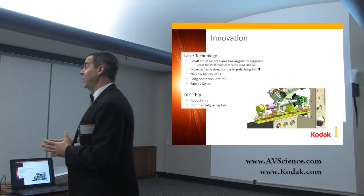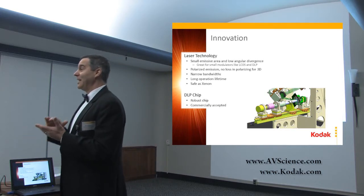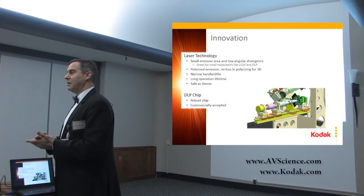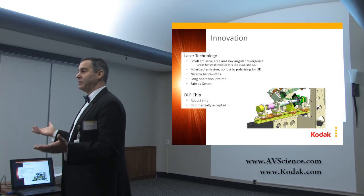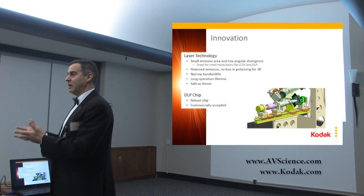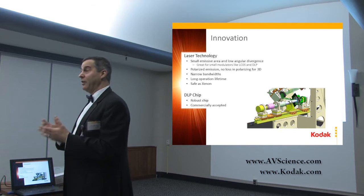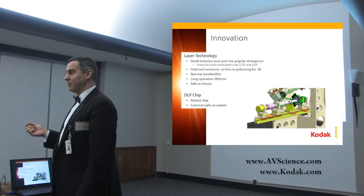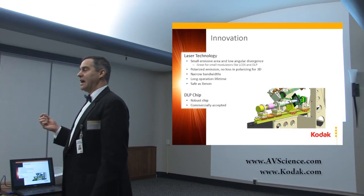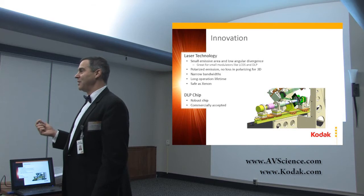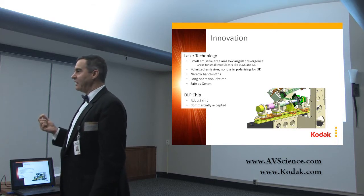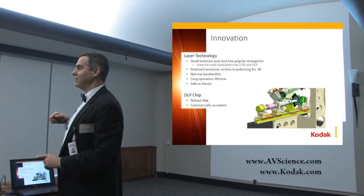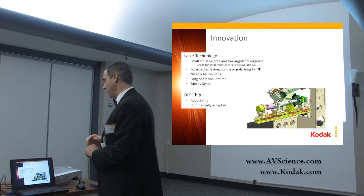Narrow bandwidths. Xenon lamps have a broad spectrum, very nice and flat in the visible regime — good for separating and recombining to make a three-color projector. But lasers emit in very narrow wavelength spans. You have red, green, and blue colors. In the case of the lasers we're using now, they're approximately 1 nanometer in width. So you can get extended gamut very easily by selecting them far out on the color triangle, and we'll show you more about that.